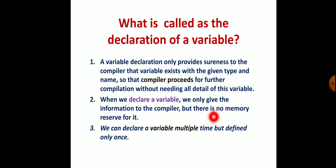The compiler will ensure that yes, this variable does exist. When we declare a variable, we only give the information to the compiler but there is no memory reserved. This is one of the key points that you have to understand. While the declaration of a variable, there is no memory reserved for it.